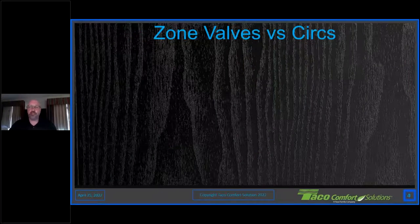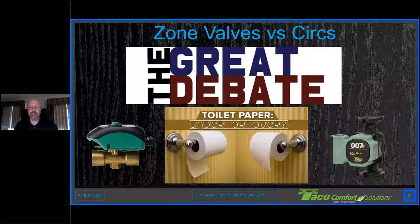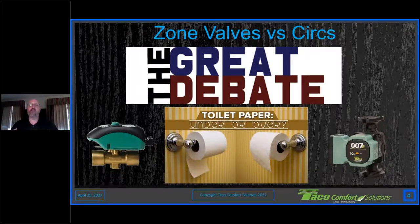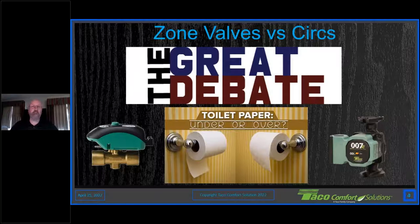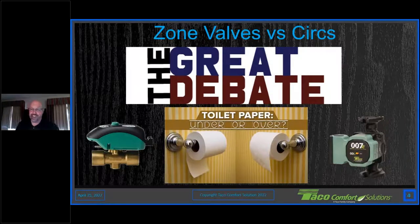Zone valves versus zone circulators — the great debate. Which one is better? If you had your choice, how would you zone a system? I think this rivals the debate over which way to put toilet paper on — over or under. There was actually a patent from a couple hundred years ago that settled it: it's supposed to be over.